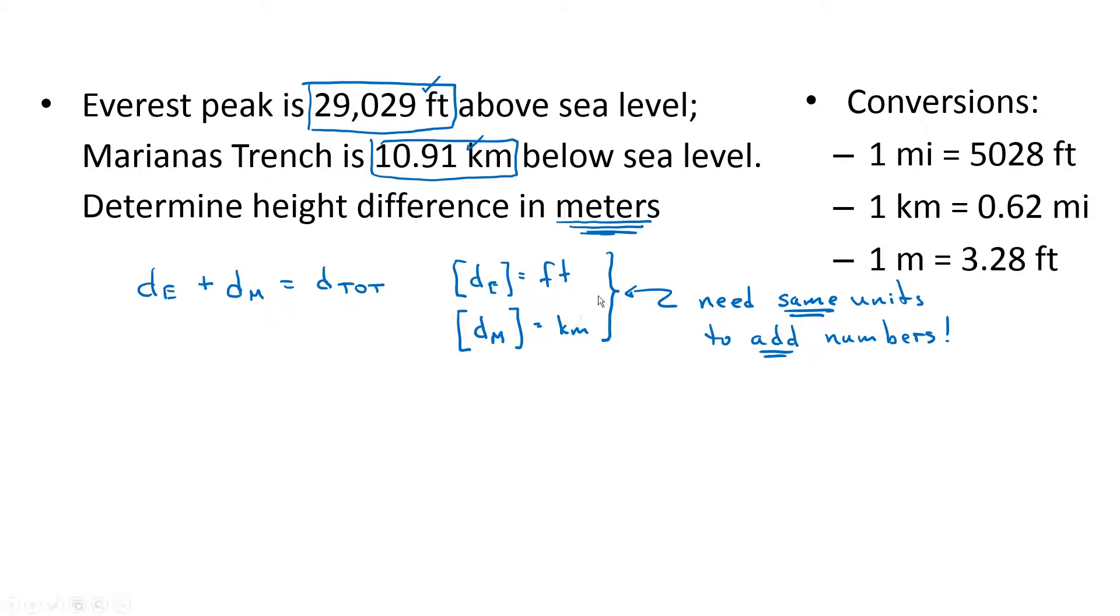I could convert both of these numbers to meters and then add them. I could also convert DM to feet and then add them, or I can convert DE to kilometers and add them. After the total difference is either in feet or kilometers, I can convert that number to meters. I think I will convert DM to feet and do my addition in units of feet.